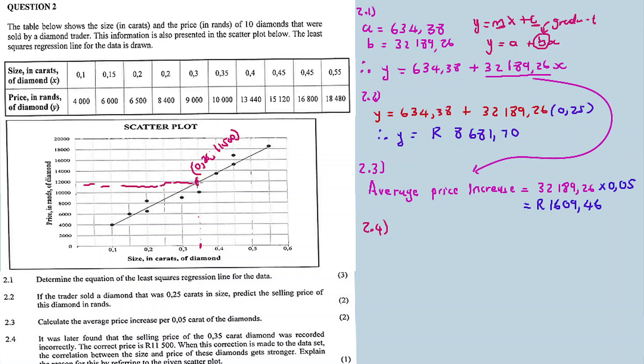The reason why the correlation between the size and price of these diamonds gets stronger is because the corrected point is closer to the regression line. The corrected point is closer to the regression line, hence the stronger the correlation of the information.